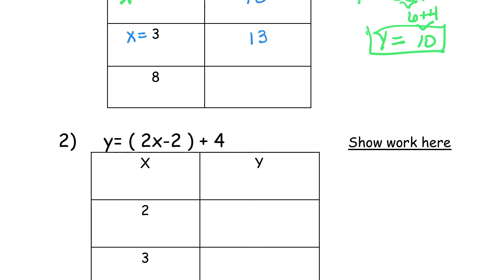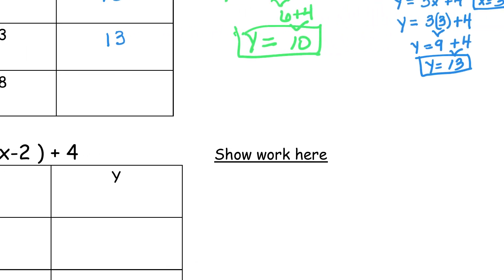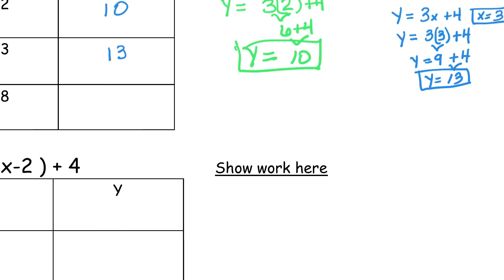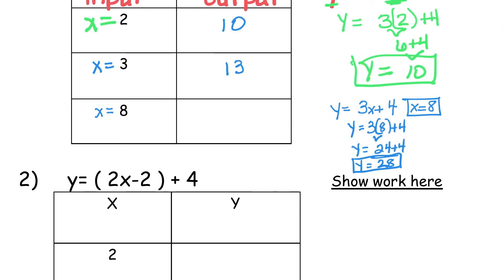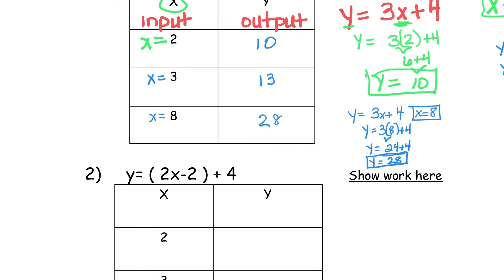For the next one, x is equal to 8. I'm going to rewrite the problem: y equals 3x plus 4, and x is equal to 8. Pause the video and see if you can try this one on your own. And if you did it correctly, y is equal to 28. Come back over here to your table — y is equal to 28. And you're done with that one.